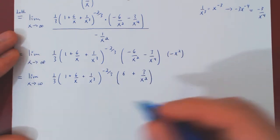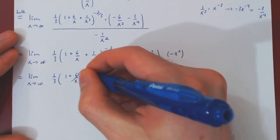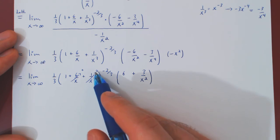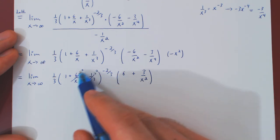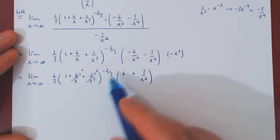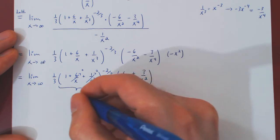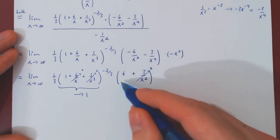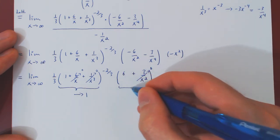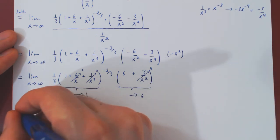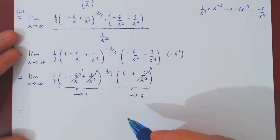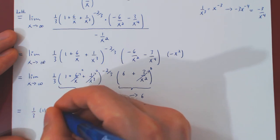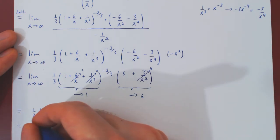Now we're ready to let x tend to infinity. As x tends to infinity, 6 over x tends to 0 and 1 over x cubed tends to 0, so the argument of the power approaches 1. Since 1 to any power is simply 1, this term approaches 1. Meanwhile, 3 over x squared approaches 0, so the second part approaches 6 plus 0, which is 6. Since 1 third is a constant, we are left with 1 third times 1 times 6, which is 6 over 3, equal to 2.